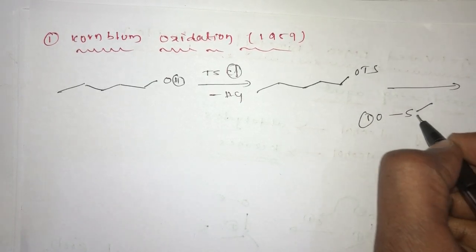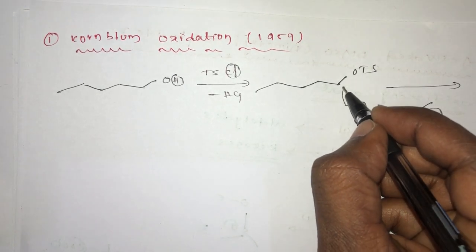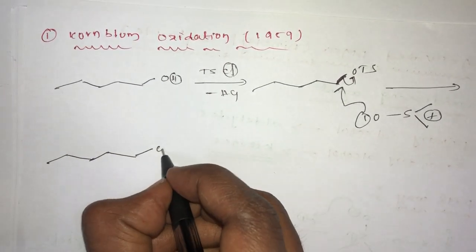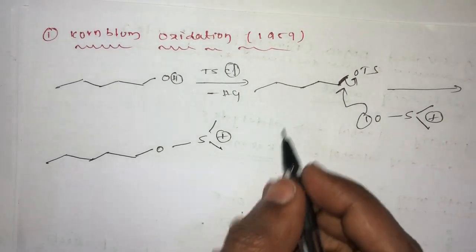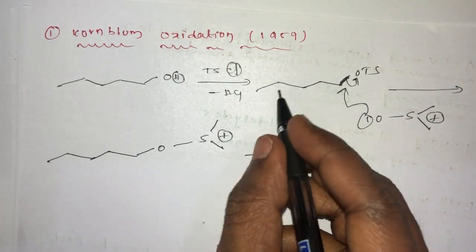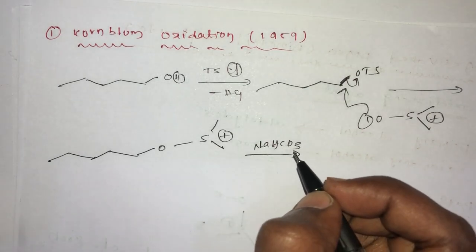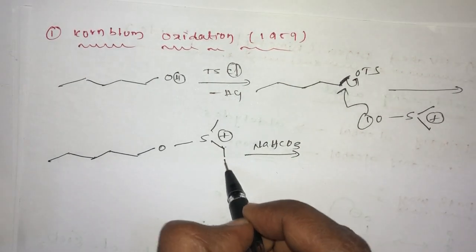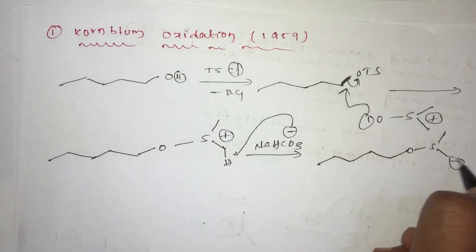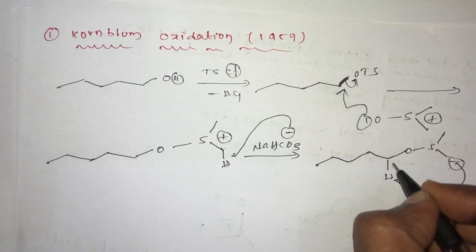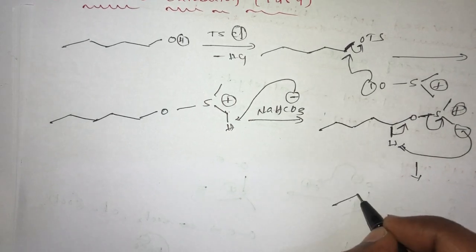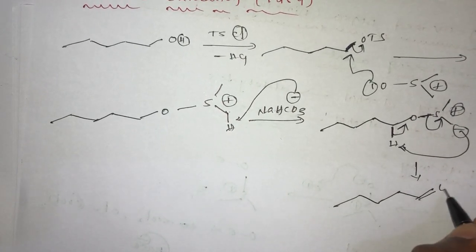In DMSO, the oxygen with a positive charge is attacked on the substrate and OTs leaves as the leaving group. So we get an O-positive charge intermediate. Again it is treated with a base — NaHCO₃, sodium bicarbonate — which takes the proton. You get a negative charge, and this bond migrates, this bond migrates, and this bond leaves.